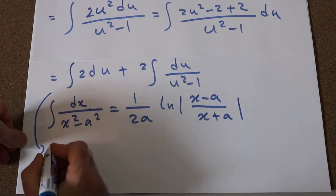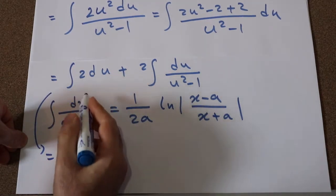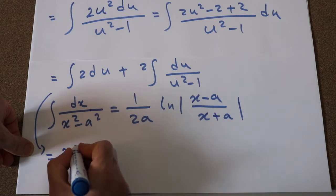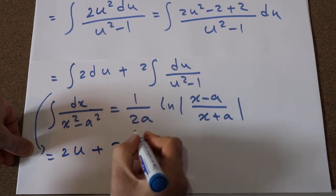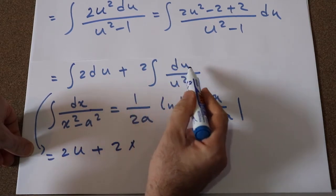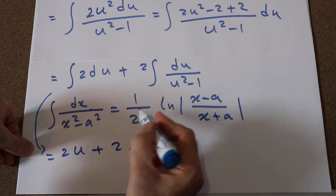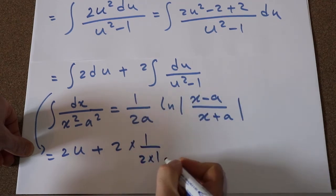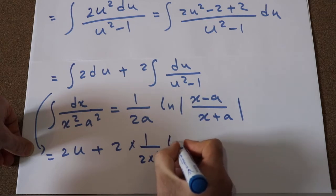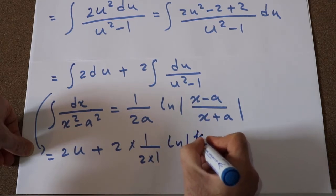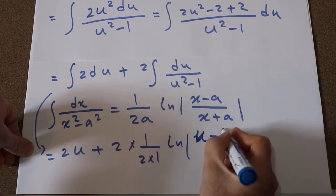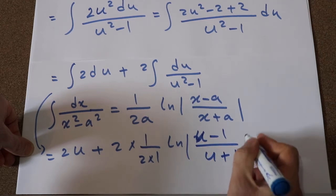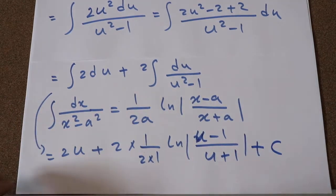The integral of 2 du equals 2u, plus 2 times the integral of du over u² minus 1, which equals 1 divided by 2a — and 2 times a is 1 — times ln|u minus a divided by u plus a|, plus C, which is the constant of integration.